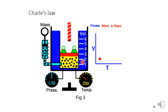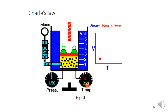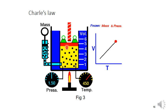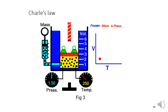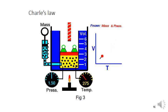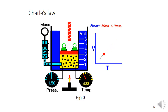Charles' law states that at constant pressure, as the temperature increases (for example at 250 K) the volume also increases proportionally. Mathematically, V is directly proportional to T, so V = CT, or V/T = C (constant). Here T is the absolute temperature. If temperature is given in degrees centigrade, we convert to absolute temperature by adding 273 to get Kelvin.